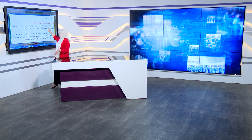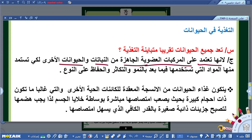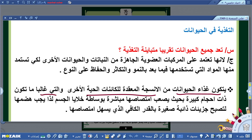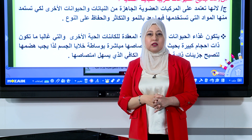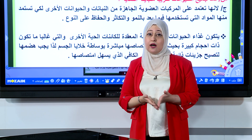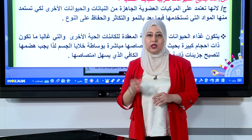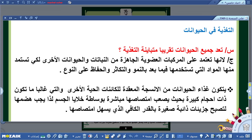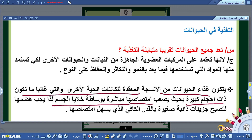الحيوانات تعتمد على المركبات العضوية الجاهزة من النباتات والحيوانات الأخرى لاستمداد المواد اللازمة للنمو والتكاثر والحفاظ على النوع. يتكون غذاء الحيوانات من الأنسجة المعقدة للكائنات الحية الأخرى والتي غالباً ما تكون ذات أحجام كبيرة يصعب امتصاصها مباشرة بواسطة خلايا الجسم، لذلك يجب هضمها.